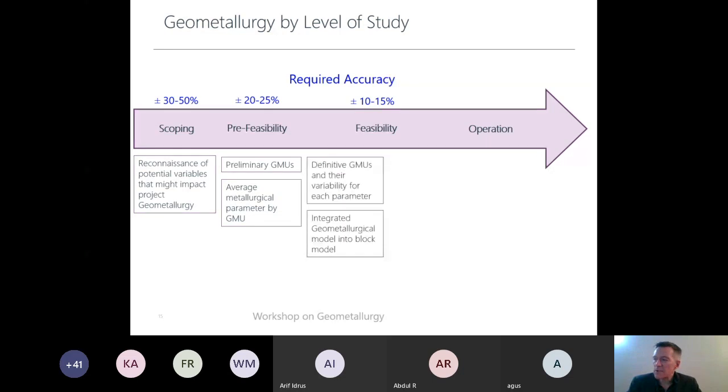Afterwards, moving to the feasibility, in this case we need to get definitive geometallurgical units, understand the variability, not only the average or median. Variability is important for each parameter, and integrate the geometallurgical model into the block model.